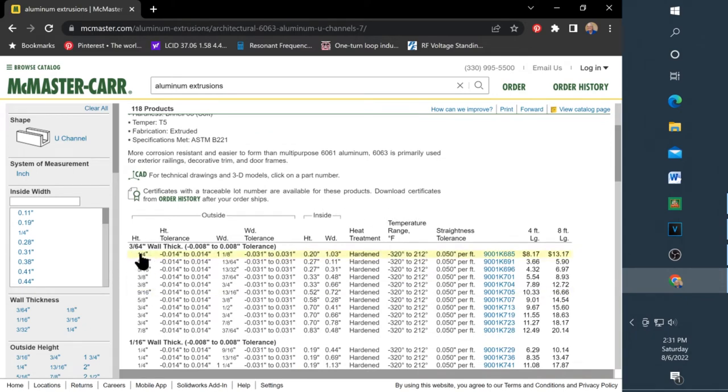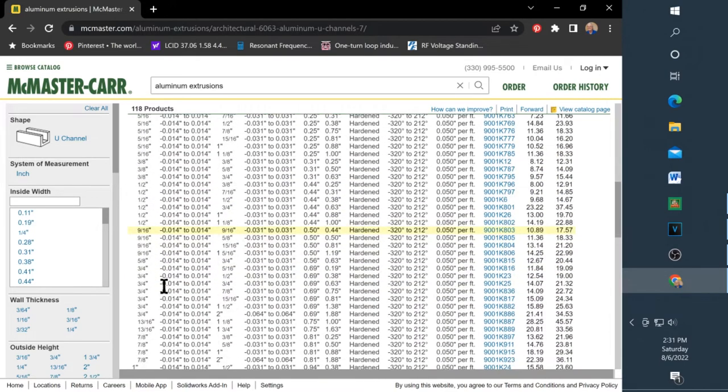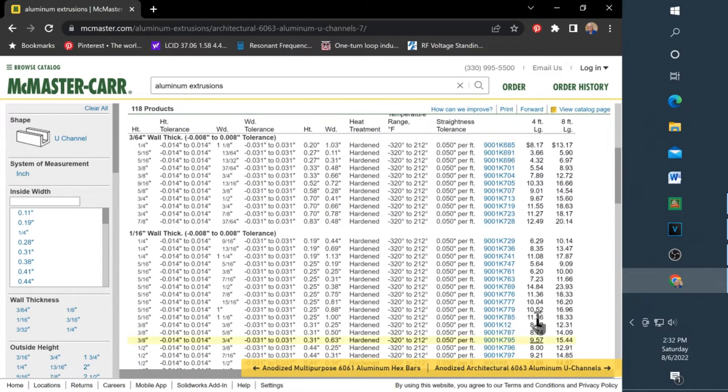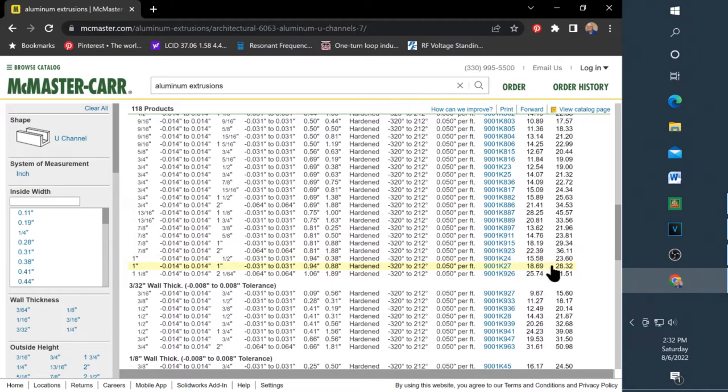And let's click on that. And here's the, it's listed by the wall thickness and then the height and the width. So what I showed you that I used for my four foot on a side loop was 1/16th inch wall, 1 inch by 1 inch, which is down here. And right here's the prices. If we go to the top of the column. This column is 4 foot lengths and this column is 8 foot lengths.